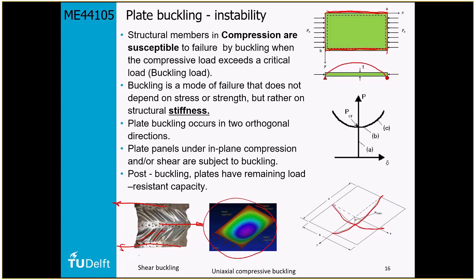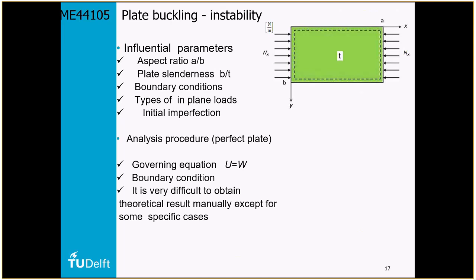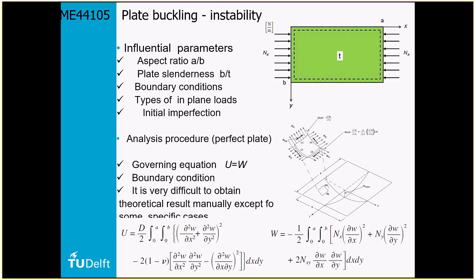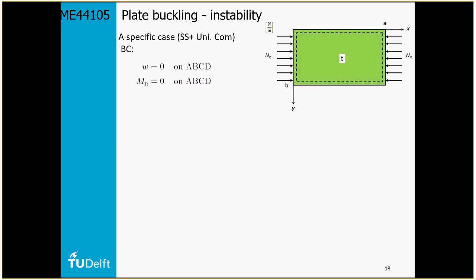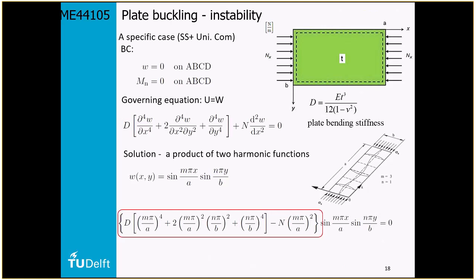To calculate plate buckling instability, the formulation is basically the same as beam buckling. We have the lowest mode, then the first and second modes, and here you can see M equals three — three buckling modes over the length and only one in the width direction. If you calculate the buckling risk for these different modes, you will see something strange.